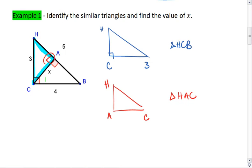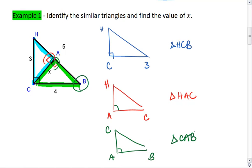And then lastly, let's look at this green triangle here. Again, I want to pull out my right angle, which is angle A. I see that we have a shared angle B here, so let's line up the Bs, and then that leaves C up here. So this is triangle CAB. And all these triangles are similar. So triangle HCB is similar to triangle HAC, which is similar to triangle CAB.